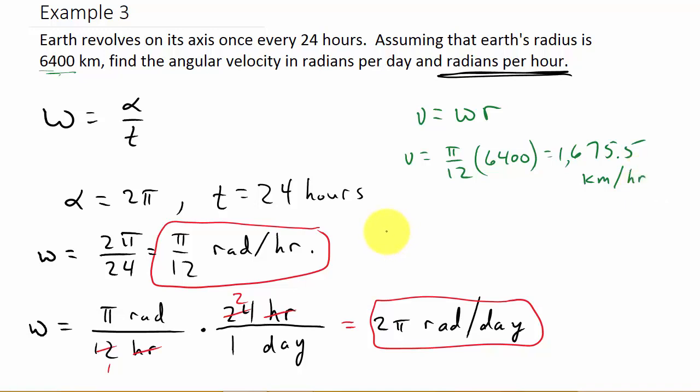Now what if we wanted to find the linear velocity using this angular velocity, radians per day? Well, it's the angular velocity 2 pi times the radius.